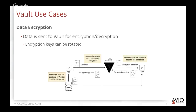Vault also provides data encryption. This way you don't have to write your own encryption or pull in a library you don't know much about. Vault can handle encrypting and decrypting data, and keys for that encryption can be rotated on a regular basis or on demand. Your application sends the data to vault, vault encrypts it and returns the encrypted data, and then you can store that in vault or in another data source.